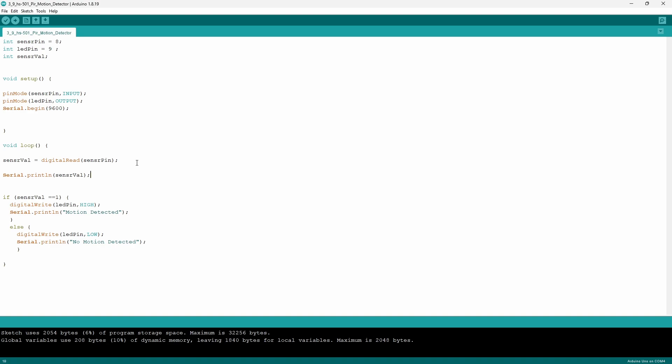This will only store the value of 1 or 0, high or low. Next I tell the Arduino that I want to print the value of the variable through the command serial.println onto the serial monitor.